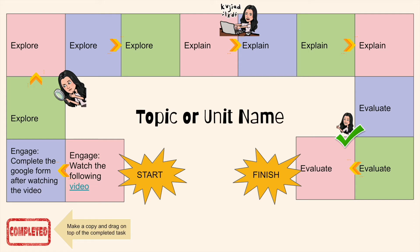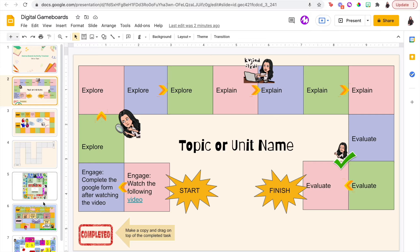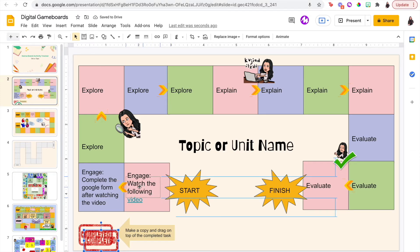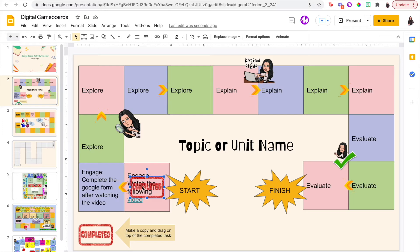Students will access this game board at the beginning of a topic or unit and work through the different tasks, either in a self-guided way or at the pace chosen by the teacher. As students complete tasks, you can instruct them to make a copy of the completed sticker and add it on top of the tasks that are finished. This way you'll get an idea of how many tasks the students have actually completed.